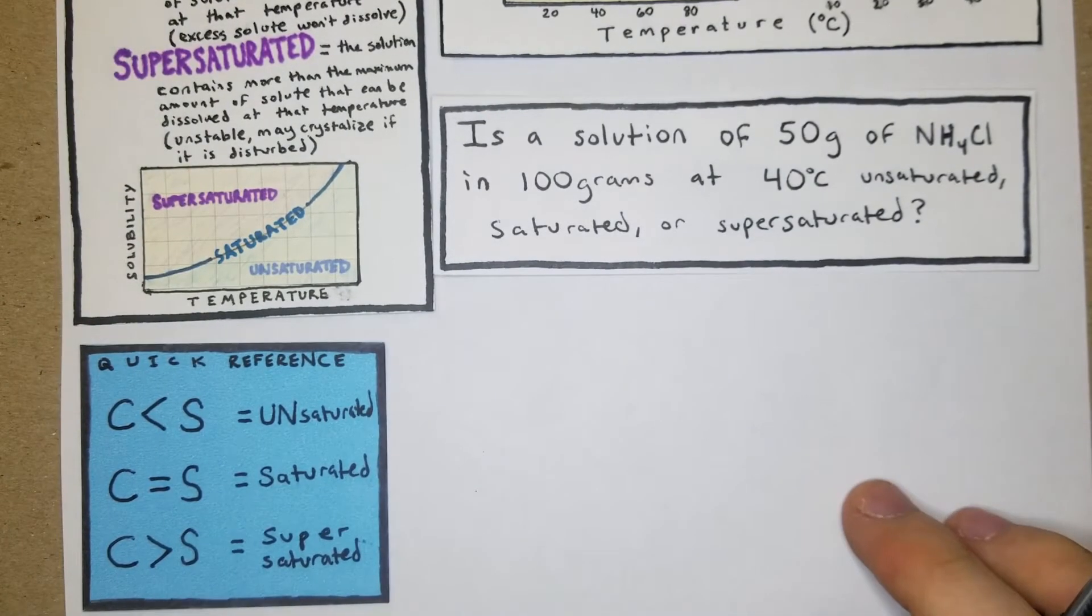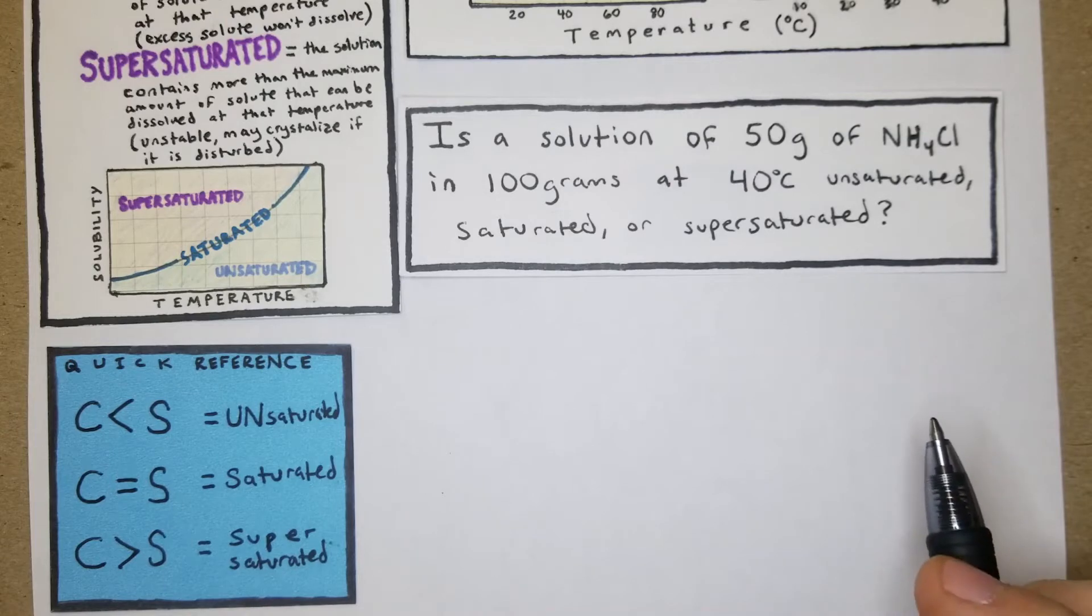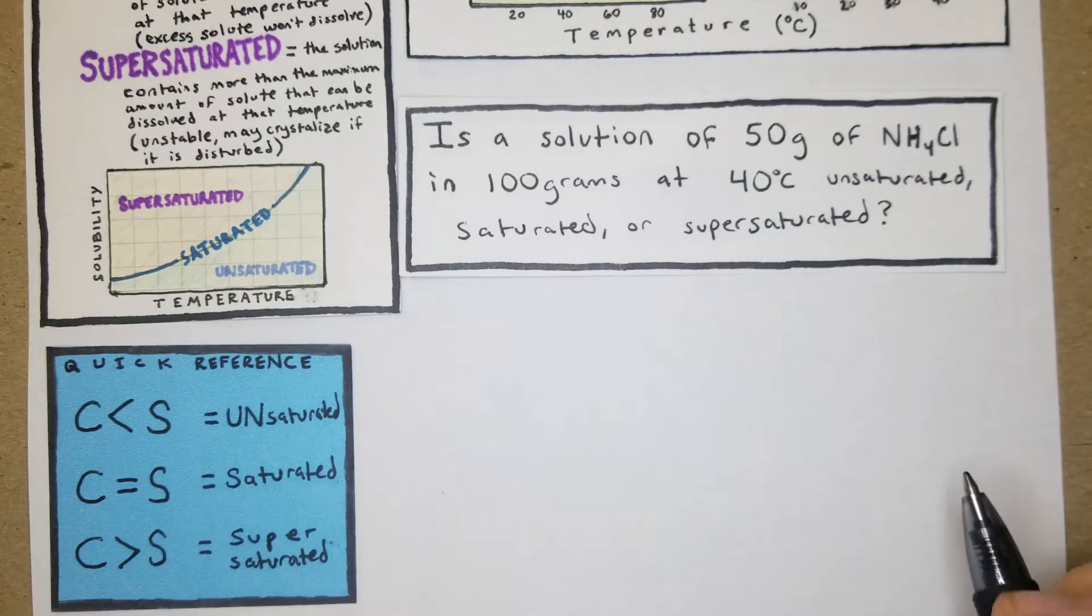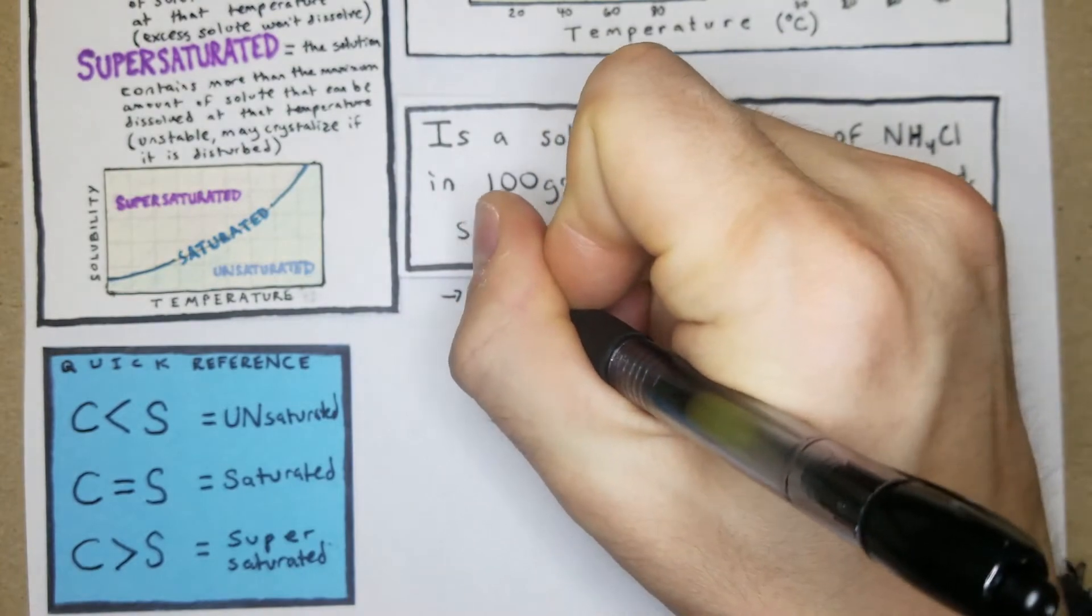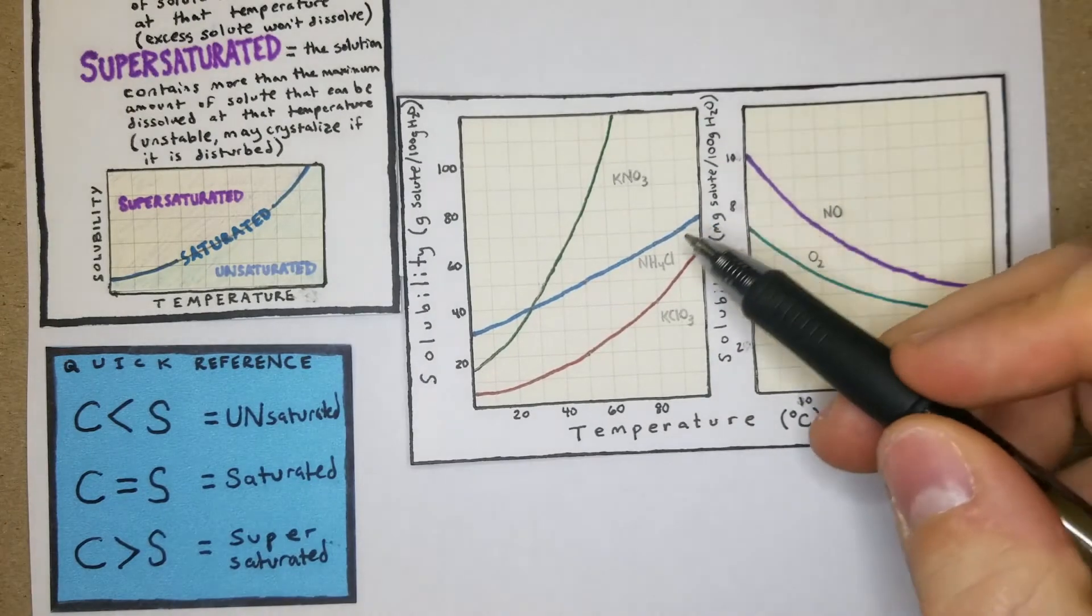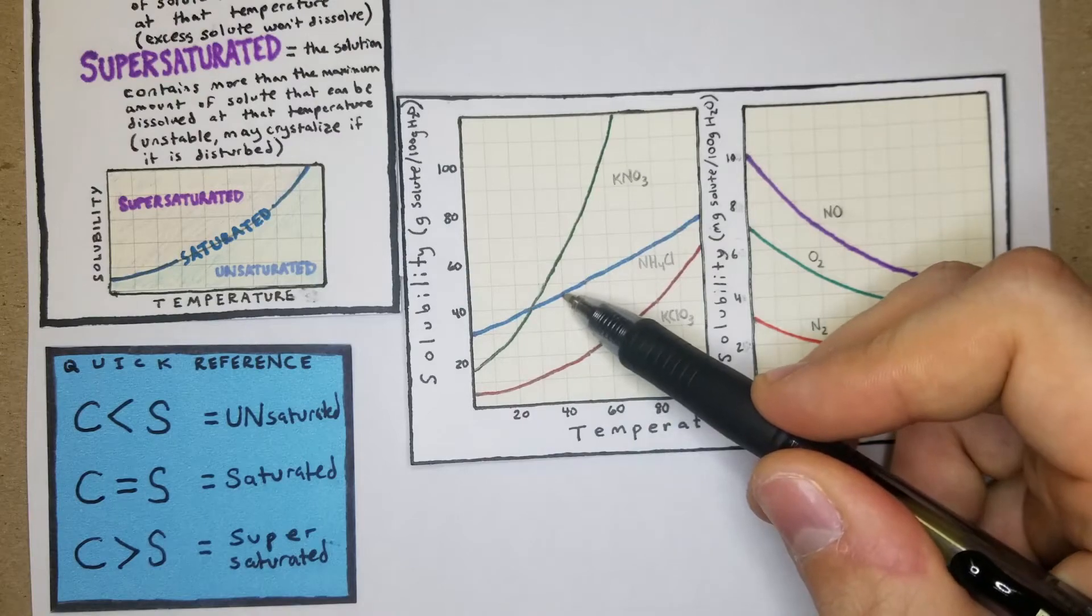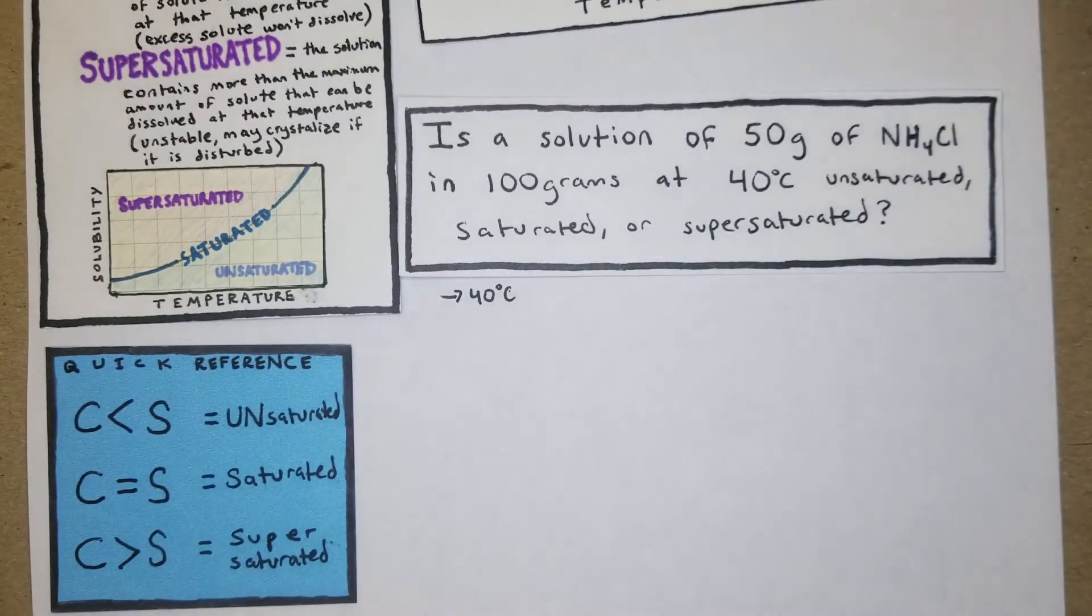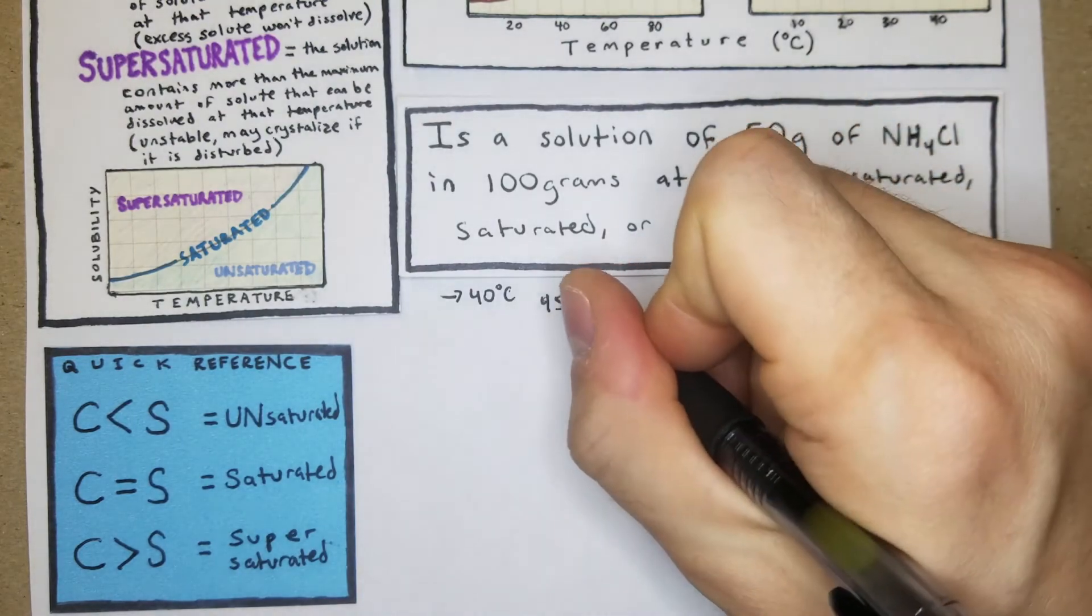Here we have: is a solution of 50 grams of NH4Cl in 100 grams of water at 40 degrees unsaturated, saturated, or supersaturated? We have 40 degrees Celsius and we're looking at NH4Cl. We'll just go up here, it's halfway between these two boxes, so the solubility would be 45 grams of NH4Cl per 100 grams of H2O.